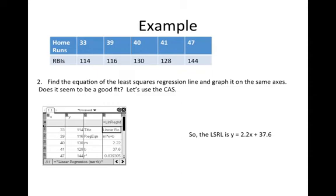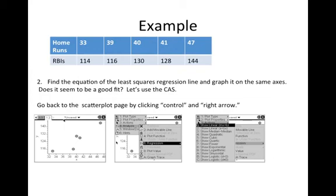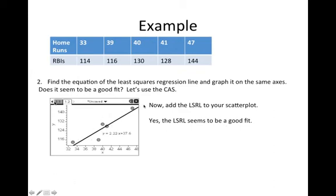Now we want to add it to our scatterplot. You're going to go back to the scatterplot page by clicking control and right arrow and that will take you back to this page. You're going to go to menu, analyze, and pick regression and you want it to show linear. What we just found, MX plus B. Then press enter and boom. There is your regression equation, your LSRL on your scatterplot along with the equation right here. So add that to your scatterplot that you made previously.